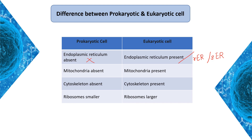Mitochondria are present in eukaryotic cells and control the release of energy within the cell. The cytoskeleton provides structural support. In prokaryotic cells, the ribosome is smaller, while in eukaryotic cells, the ribosome is larger. Ribosomes are responsible for protein synthesis.